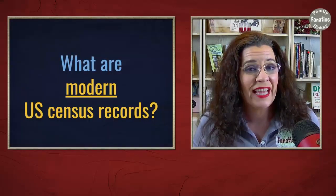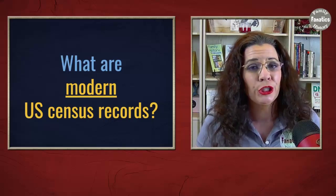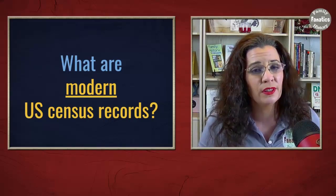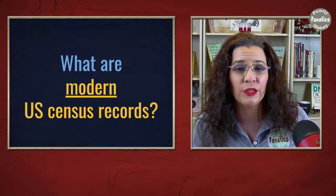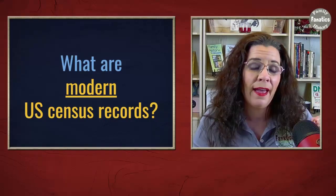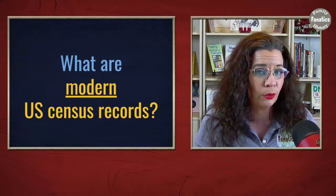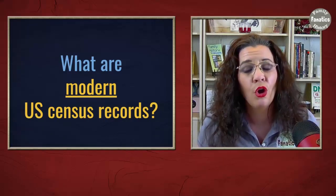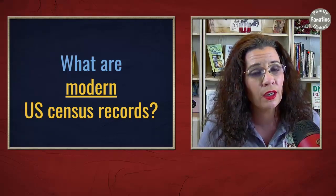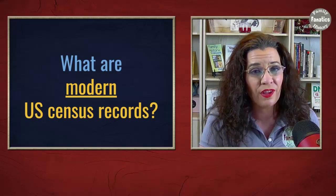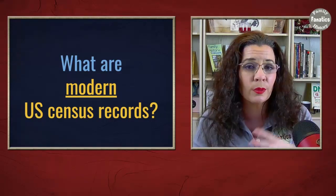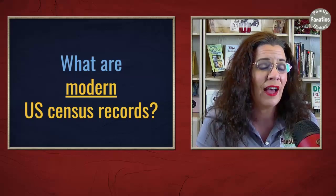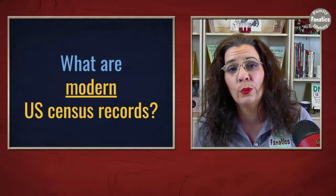What exactly is a modern U.S. Census record? There are two ways you can define it. It could be defined from the point where every household person was listed — that would be 1850 to present. Or it could also be every member of a household listed as well as their relationship to the head of the household, and that would be 1880 and forward.